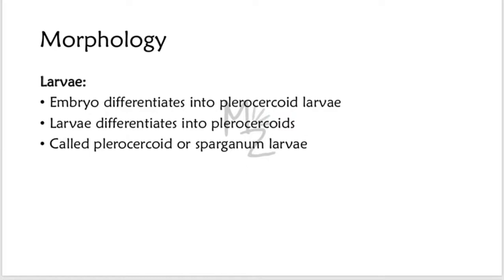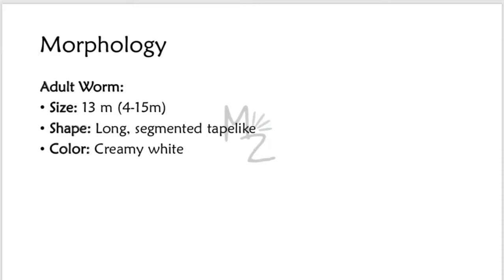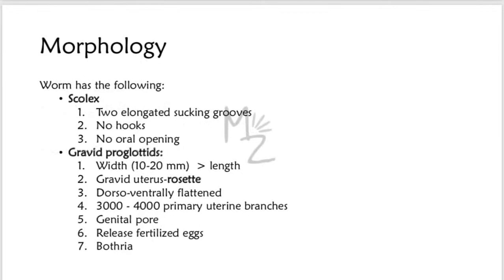Adult worm: it is the longest of the tapeworms, measuring about 13 meters in length. It is long, segmented, and tape-like or ribbon-like, creamy white in color. The scolex, in contrast to other cestodes which have suckers, has two elongated sucking grooves by which the worm attaches to the intestinal wall. The scolex has no hooks, unlike Taenia solium and Echinococcus.